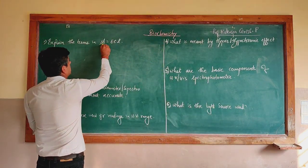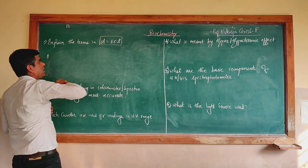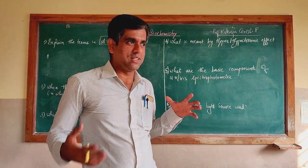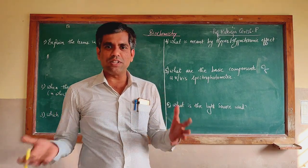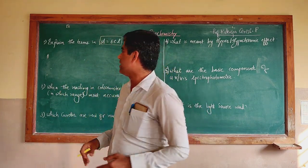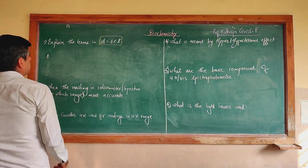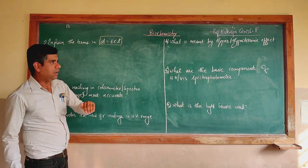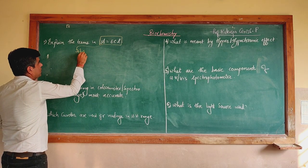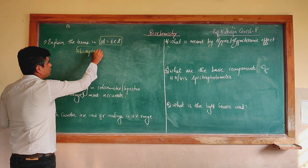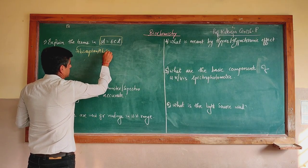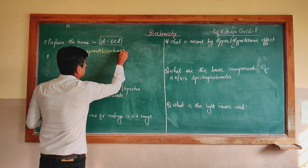The first question: when talking about colorimetry and spectrophotometry, the formula we encounter is A = εcl, derived from Beer's and Lambert's law. The question is: explain the terms in A = εcl. A stands for absorbance — the absorbance value you get at that particular wavelength.